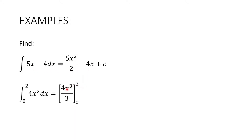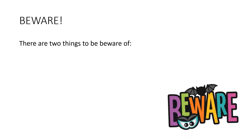Substituting 2 in, 4 times 8 divided by 3 equals 32 over 3, and that's our answer. Two things to be aware of: first, when you get a 0 on the integral sign as a lower limit, in most cases substituting it gives 0 — but not for e to the x or cos x. e to the 0 is 1, and cos 0 is 1, so be careful with those two. Second, when you have multiple terms and go to subtract the second limit, put it in brackets because you want to subtract all of it.